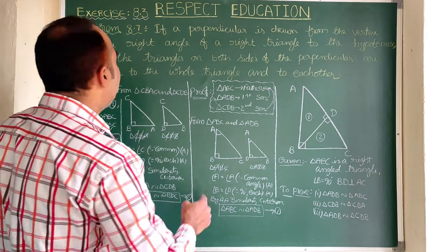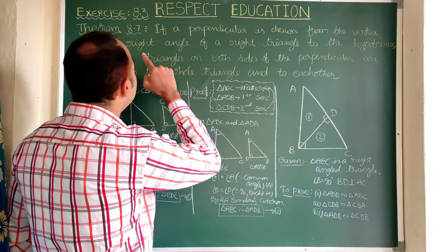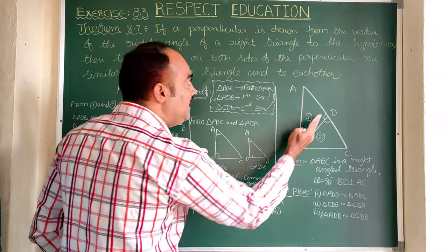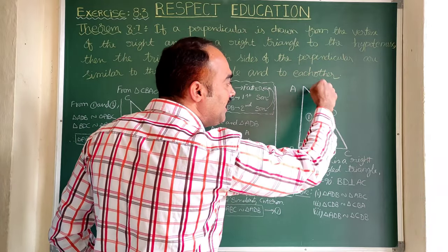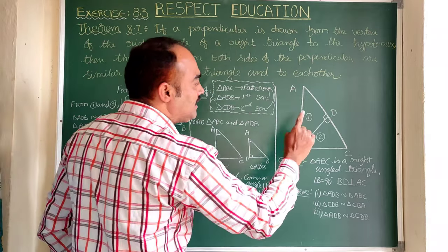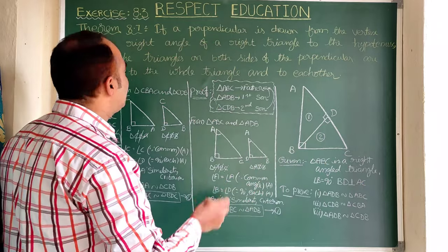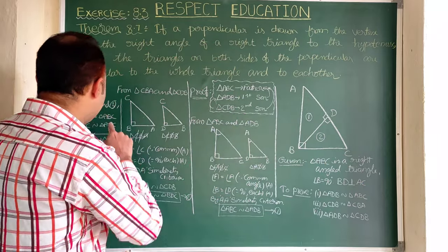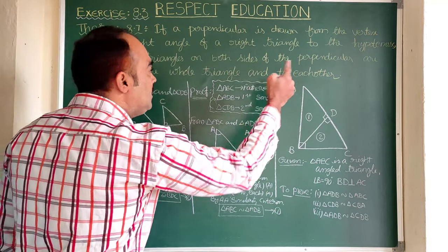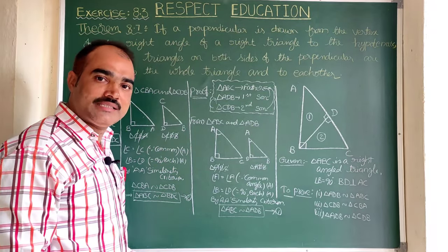So we can say: if a perpendicular is drawn from the vertex of the right angle of a right triangle — that is, BD from B — to the hypotenuse AC, then the triangles on both sides, namely triangle ADB and triangle CDB, are both similar to the whole triangle ABC, and also similar to each other. With this, Theorem 8.7 is completely proved.